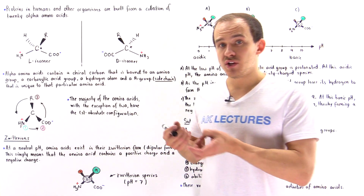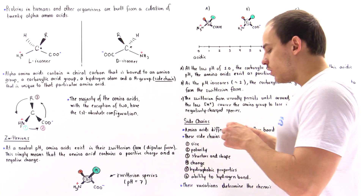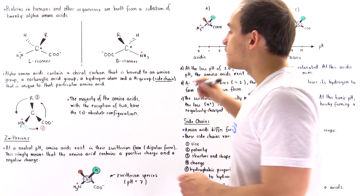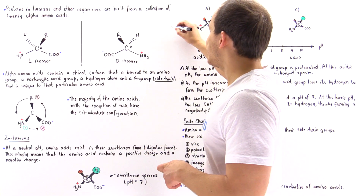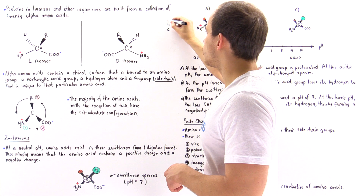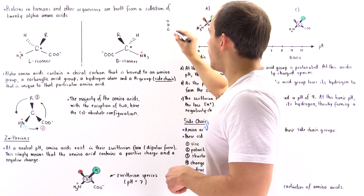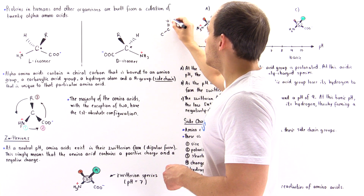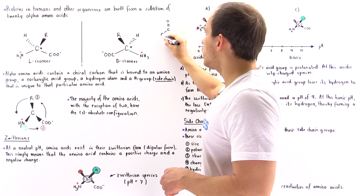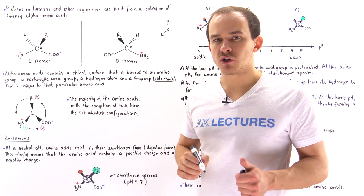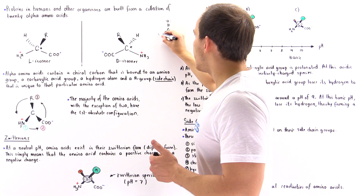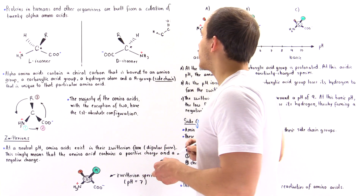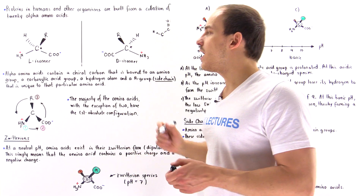Why do we call an amino acid an alpha amino acid? Well, let's recall some basic organic chemistry. We know that if we have a carbonyl group — a carbon-oxygen double bond — and we have another carbon attached to this carbonyl group, then this carbon is known as an alpha carbon. For example, if we have a hydrogen atom attached to the alpha carbon, this H atom is known as an alpha hydrogen atom.